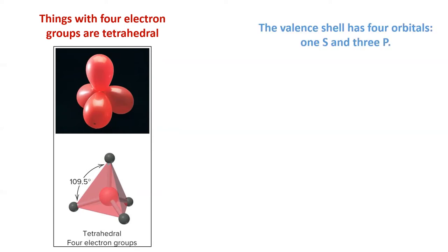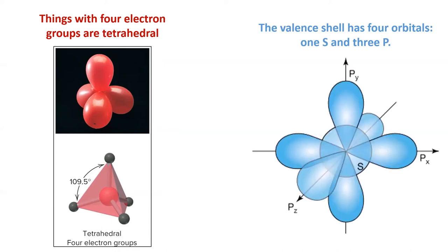Four is a common number of electron groups because there are four orbitals in the valence shell of most atoms. So far, this makes sense. Until we imagine the shape of the four orbitals in the valence shell. Overlapping an S and three P's doesn't look anything like a tetrahedron. What's going on?